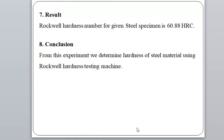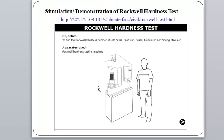Result: The Rockwell Hardness Number for the given spring steel sample is 60.88 HRC (also called HRN = 60.88). Conclusion: From this experiment, we determined the hardness of steel material using the Rockwell Hardness Testing Machine.